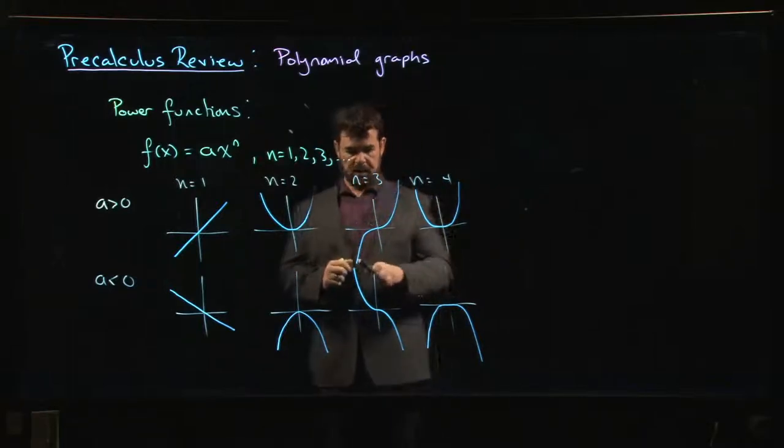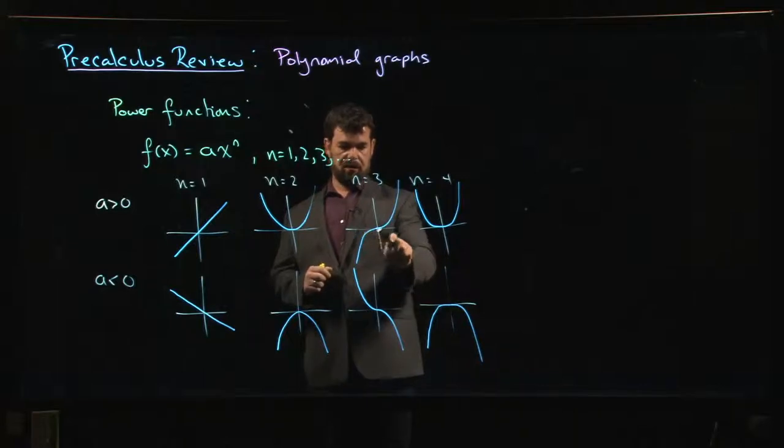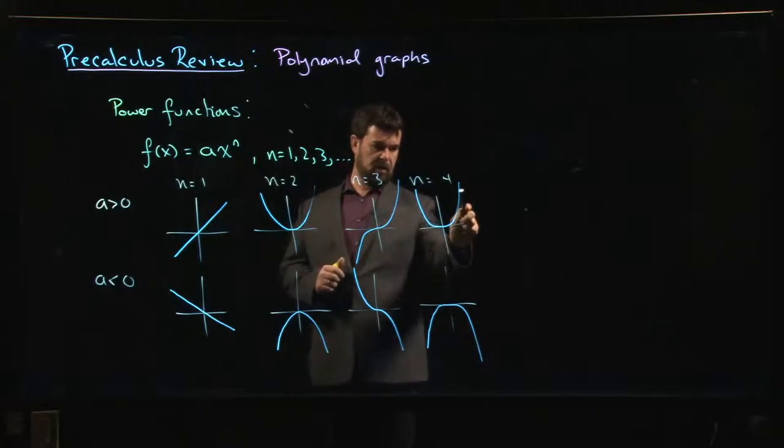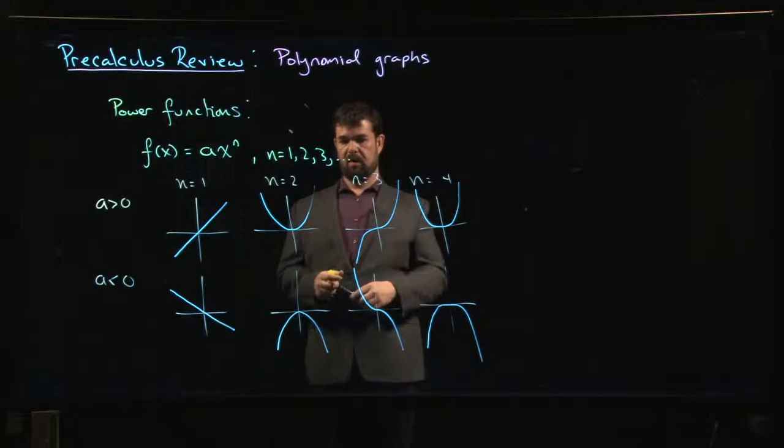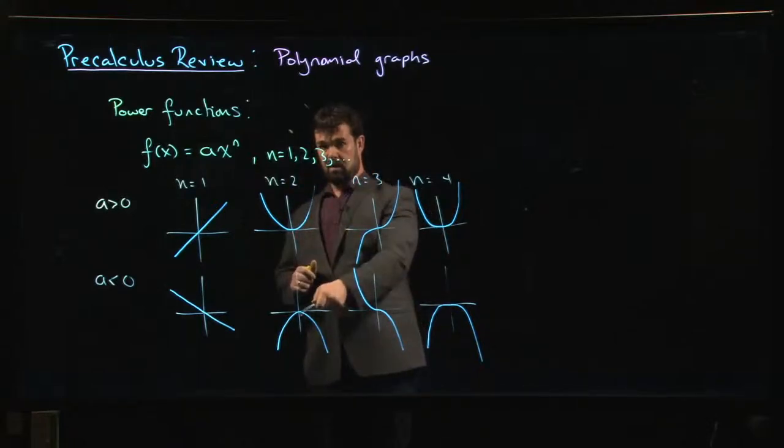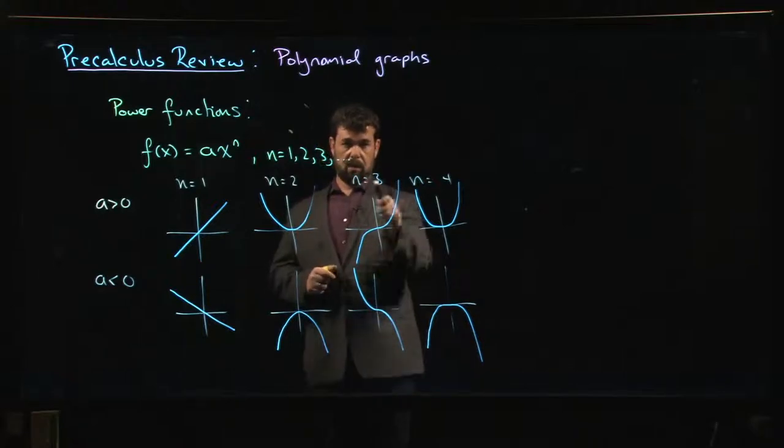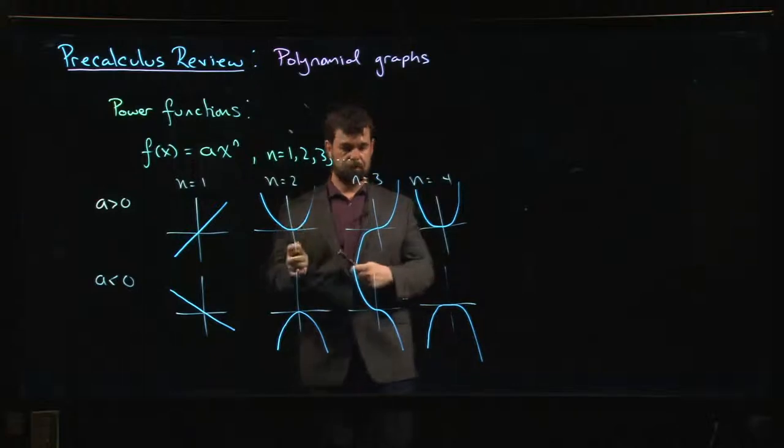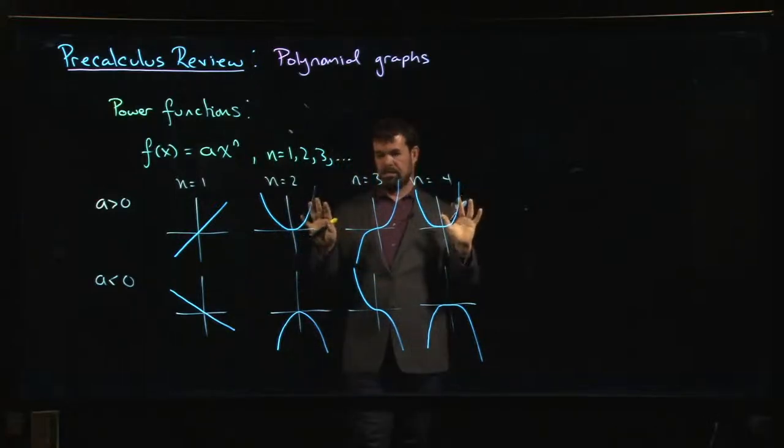Degree 5 we're going to look a lot like degree 3, except again steeper out here, flatter in there. Degree 6 going to be like degree 4 but kind of a little steeper on the sides, a little bit flatter on the bottom and so on. So in general, all the even degree ones are going to look something like quadratic, all the odd degree ones are going to look something like cubic.